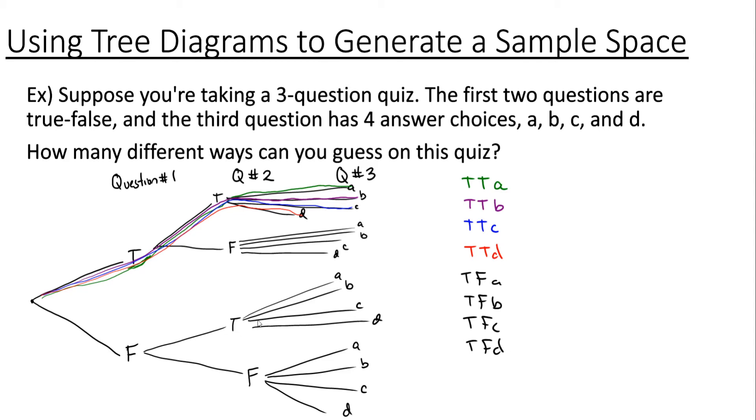Now when we get to the second part we have false true A, false true B, and this is our whole sample space.